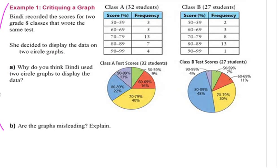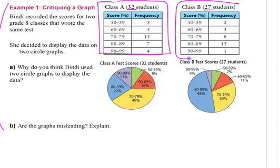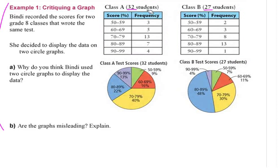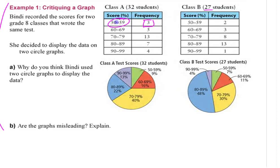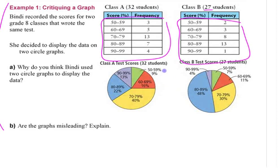Let's talk about this example. This is some data from two different classes — one has 32 students, one has 27 students, called Class A and Class B. This is a frequency table showing how frequently each range of scores came up. Three people got within this range, five people got in this range, and so on. You can compare them using the numbers, but sometimes it's helpful to put it in a graph because it's a visual representation, and most of us respond best to pictures.